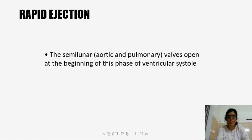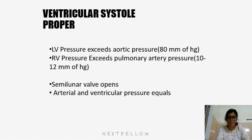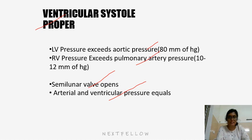Coming to the stage of rapid ejection, the semilunar aortic and pulmonary valves open at the beginning of this phase of ventricular systole. Left ventricular pressure exceeds aortic pressure, and right ventricular pressure exceeds pulmonary artery pressure, which is around 10 to 12 mmHg. The semilunar valve opens and arterial and ventricular pressures equalize. Blood is ejected from the LV into the aorta and from the RV into the pulmonary artery, and once the semilunar valve opens, pressure equalizes in the artery and the ventricles.